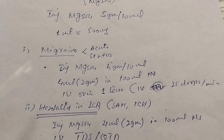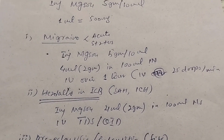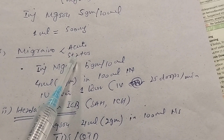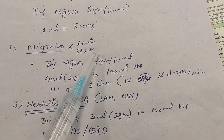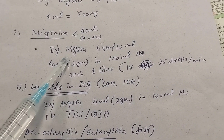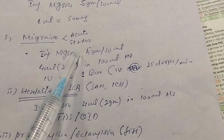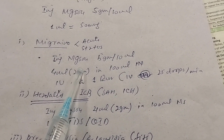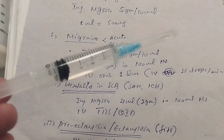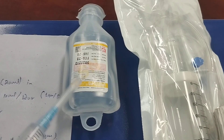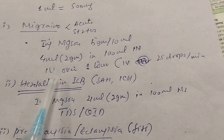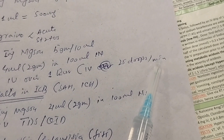For migraine headache — both acute migraine and status migraine (headache persisting more than 72 hours) — we give injection magnesium sulfate. We take 4 ml (which equals 2 grams) from the 10 ml, 5-gram ampoule and dilute it in 100 ml normal saline, given IV over 1 hour, or at a rate of 25 drops per minute.